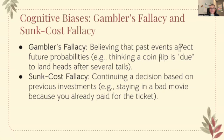We have cognitive biases: gambler's fallacy and sunk cost fallacy. Gambler's fallacy is believing that past events affect future probability — for example, thinking a coin flip is due to land on heads after several tails. Sunk cost fallacy is continuing a decision based on previous investments — for example, staying in a bad movie because you've already paid for the ticket.